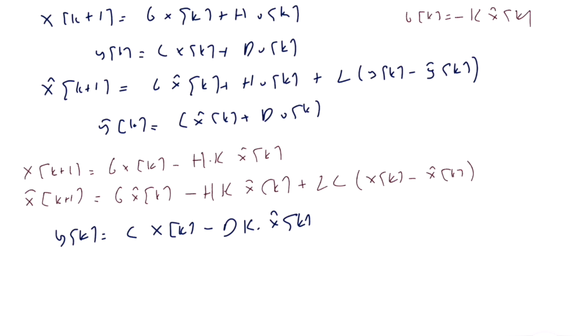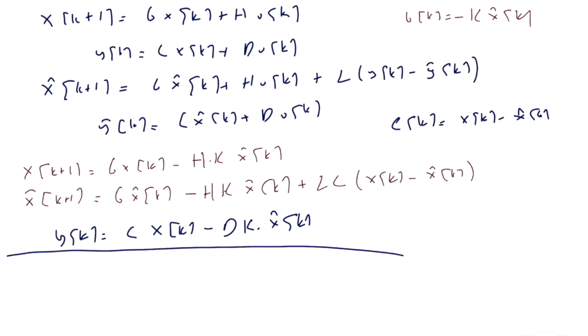We can find a complete state-space representation using X and X-hat. But recall the trick from the observer lecture: we define a new state E(K) = X(K) - X-hat(K). If we subtract the X-hat equation from the X equation, the H·K·X-hat terms cancel and we get E(K+1) = (G - L·C)·E(K). So the error dynamics are completely isolated from the rest of the system dynamics.